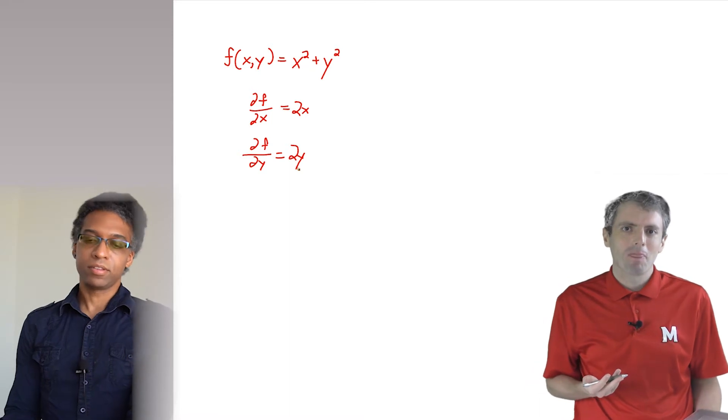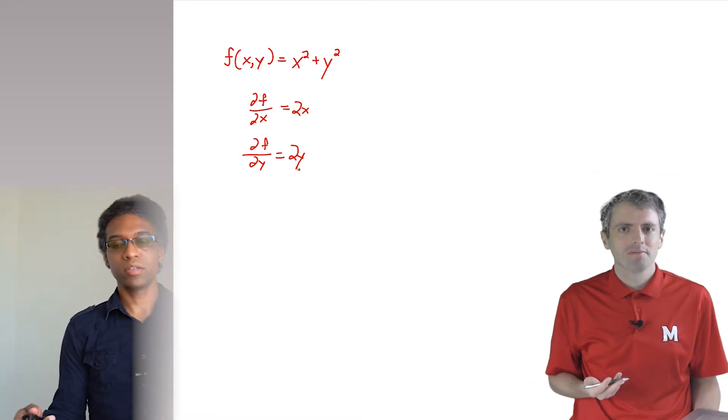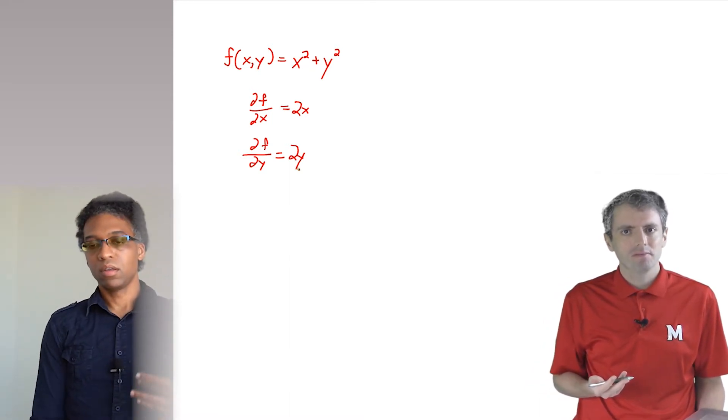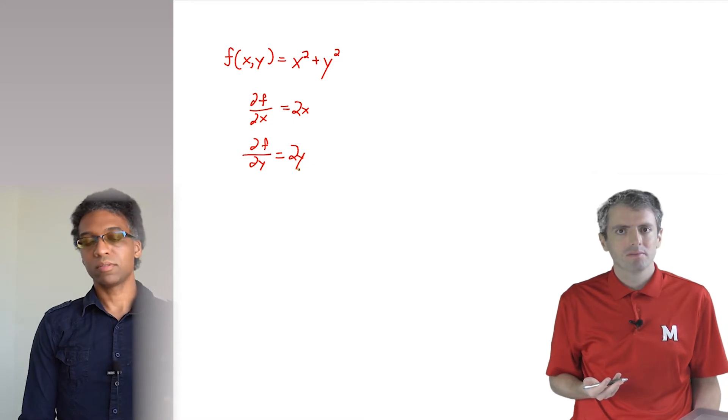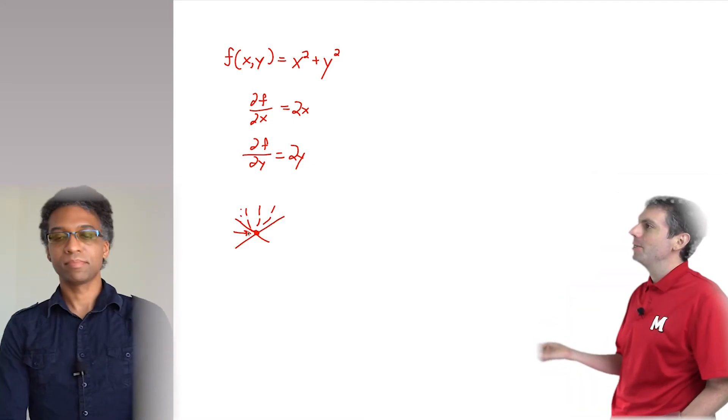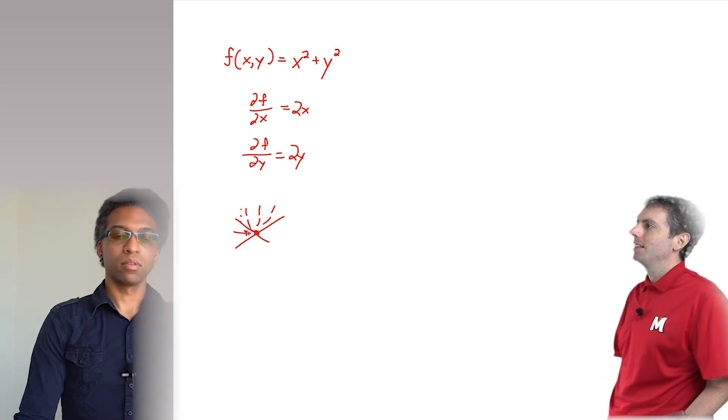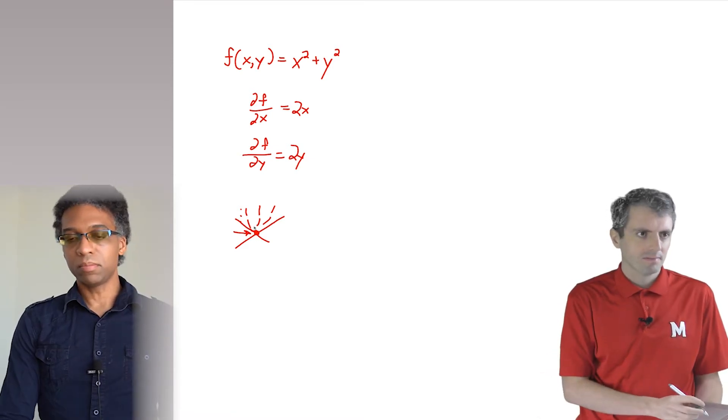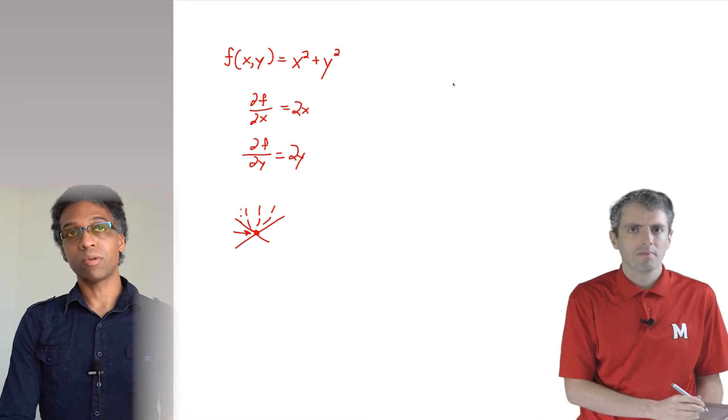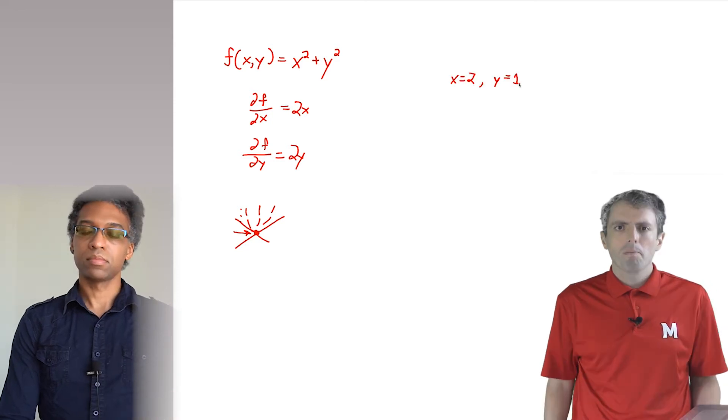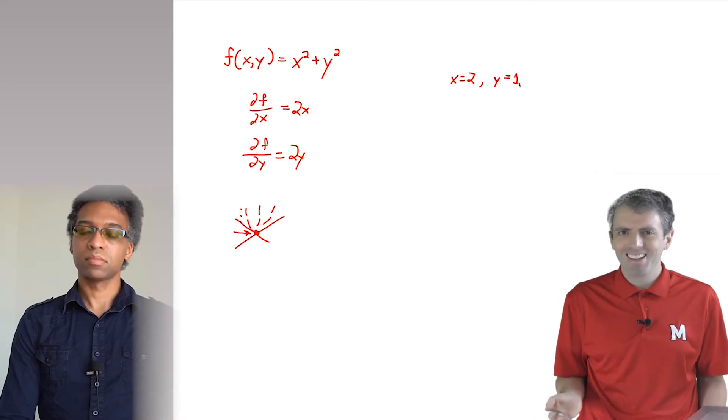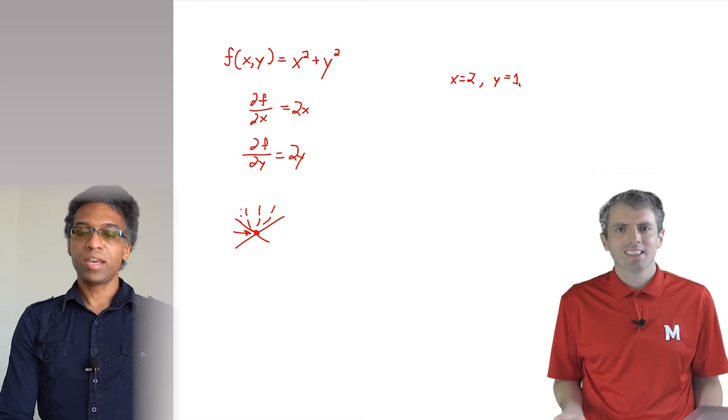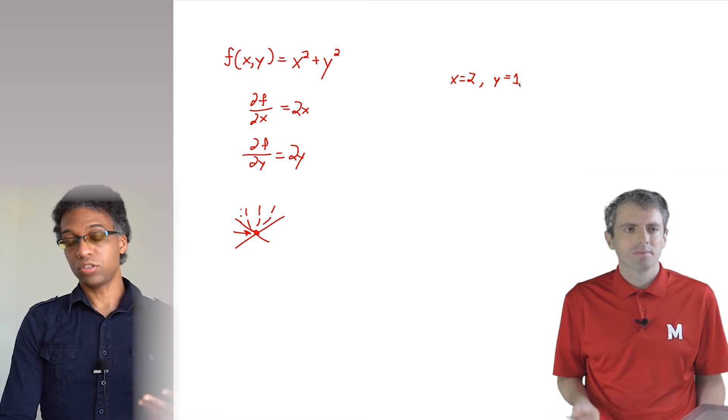Right. In this case, it's obvious. But for the loss functions we're going to be working with later, the answer won't be so clear. Okay, so how do we use the gradients to figure out when f is small? Let's say that we guess that the minimum of the function is at x equals 2 and y equals 1. But we know that it isn't. How does this help us? We can evaluate the gradient to be 4 and 2.